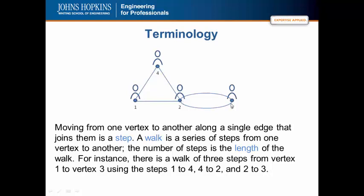So there is a three-step walk from vertex one to three using the steps one to four, four to two, and two to three. There is also a two-step walk, one to two and two to three. We can also have a walk that goes one to four, four to two, two to one, one to four, four to two, two to one, and so on. Therefore, there are an infinite number of walks that can exist in any graph.